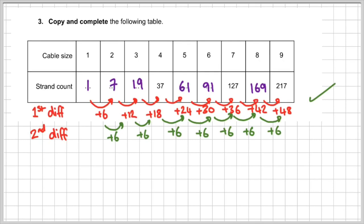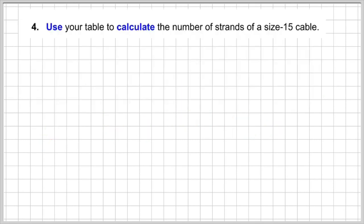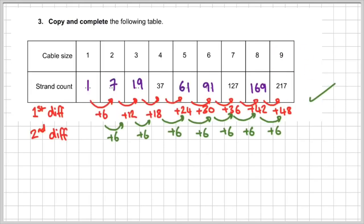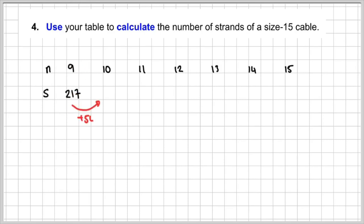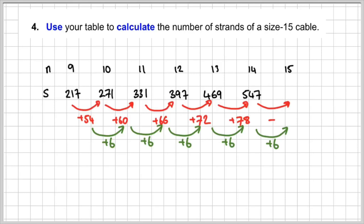So let's complete the table — 169 plus 48 gives us 217. Now we need to use the table to calculate the number of strands in the size 15 cable. We don't need to sketch it; we observe the pattern by continuing to add 6 to the second difference each time. The 9th term was 217, so continuing: 56 plus 6 is 60, and 60 added gives 331, and we carry on that pattern. The size 15 cable has 631 strands.